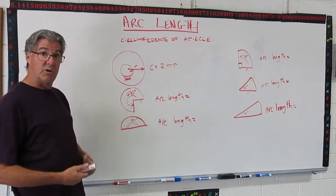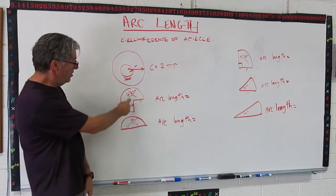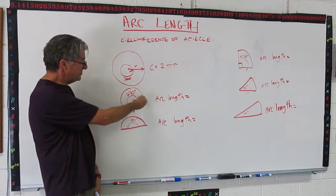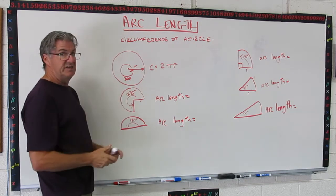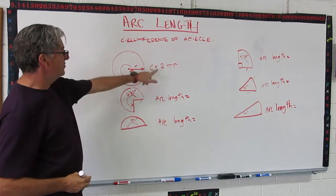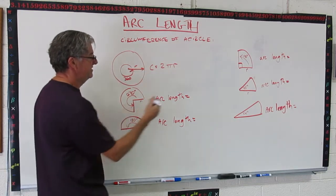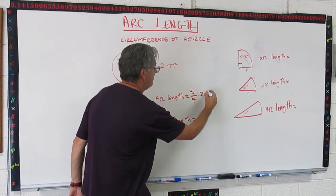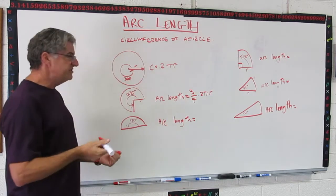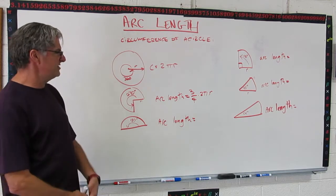A couple ways to go. I'm just going to use your real basic fractions here. 270 is three quarters of the way around. It's three quarters of 360. So the formula for this arc is going to be three quarters of this. So it's going to be 3/4 times 2πr. Now we can simplify that a little bit, but right now we're just going to leave it right there.